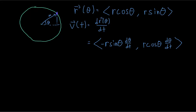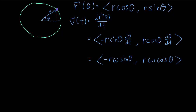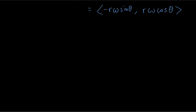We're going to rename dθ/dt as ω (omega). Omega is the rate of change of this angle — it's called the angular velocity, representing how fast the angle of the object is changing. Once we have that, we can go ahead and differentiate again with respect to time to get the acceleration.